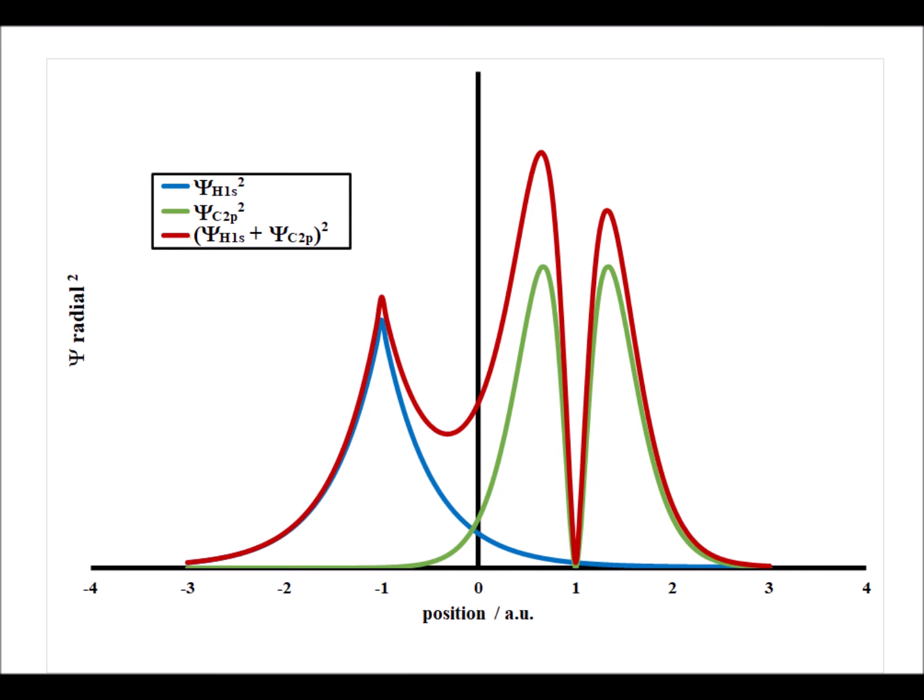Now we look in terms of the probability density for the 1s hydrogen orbital shown in blue, the carbon 2p shown in green, and then we see the probability density in red for the sigma bonding combination between those two atomic orbitals. We see that we have a substantial increase in the electron density between the nuclei, giving us a stabilizing sigma bonding combination.